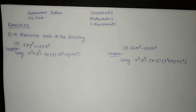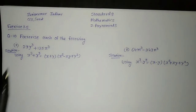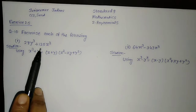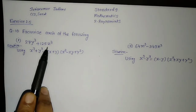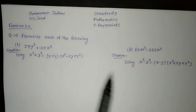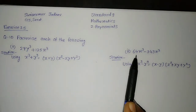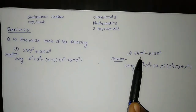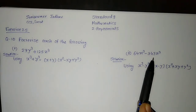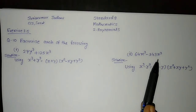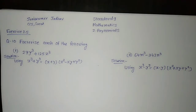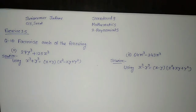Factorize each of the following: 27y cube plus 125z cube, and 64m cube minus 343n cube. We want to factorize both of these.